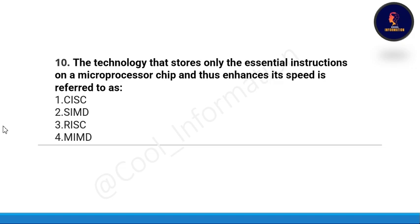Question number ten: the technology that stores only the essential instructions on a microprocessor chip and enhances its speed is referred to as — the correct option is option C, which is RISC.